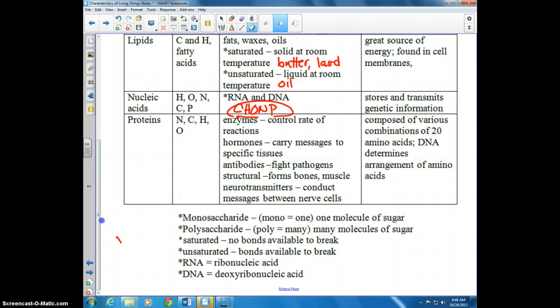What's important to know about proteins is that they are made up of 20 different molecules called amino acids. Your DNA determines the arrangement of those amino acids, and it's the arrangement of those amino acids that determines your protein and the structure of the protein.